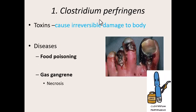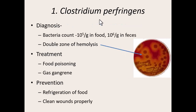Treatment: if you've got food poisoning caused by this, the treatment is just to let the diarrhea happen. It's not uncommon for people to grab anti-diarrheal medicine, but it's not a bad thing to let the diarrhea happen — it's your body's way of quickly getting rid of something not supposed to be there. If you take an anti-diarrheal, you're actually making that bacteria stay longer in your body, possibly reproducing. For gas gangrene, the infected tissue is necrotic and must be surgically removed. Depending on severity, it could mean full amputation — of toes, extremities, or legs. Prevention includes refrigerating food, proper food handling, and cleaning wounds properly.